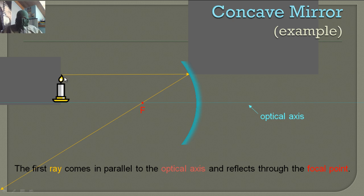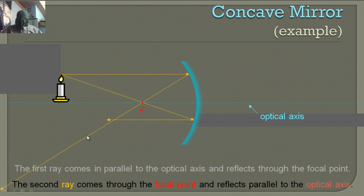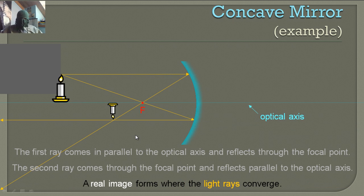The first light ray comes in parallel to the optical axis and reflects through the focal point. The second light ray is going to go directly to the focal point and then come off parallel to the optical axis. The image is formed where these two intersect.